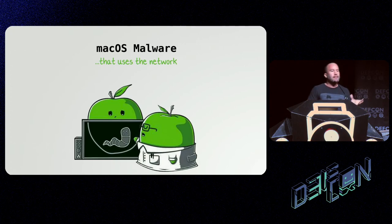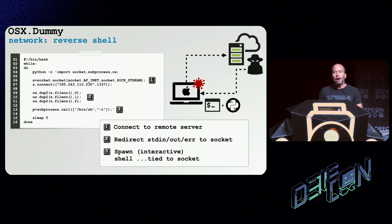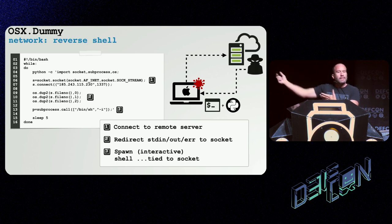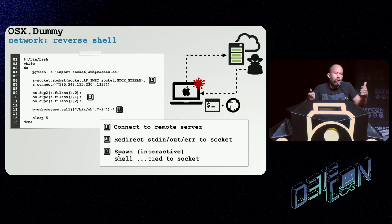Now let's look at some Mac malware that accesses the network to understand the kind of activity we're going to look for. The first malware sample is called Dummy. I named it Dummy because it's pretty dumb, but it's simple and effective. We can see on the slide it's basically a bash script that executes Python commands that do three things: connect out to the attacker's remote server, redirect standard in, out, and error, and then spawn an interactive shell tied to those sockets. Because the file descriptors for standard in and error have been redirected to the socket, this gives the remote attacker a reverse shell on the infected system — a standard vanilla reverse shell.